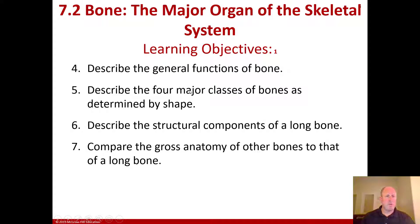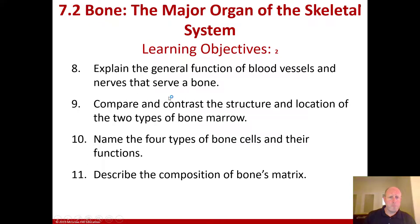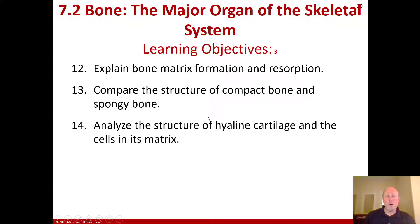Moving on to section 7.2, we want to be able to describe the general functions of bone, describe the four major classes of bones as determined by shape, describe the structural components of a long bone, and compare the gross anatomy of other bones to that of a long bone. Also explain the general function of blood vessels and nerves that serve a bone, compare and contrast the two types of bone marrow, name the four types of bone cells and their functions, and describe the composition of the bone's matrix.